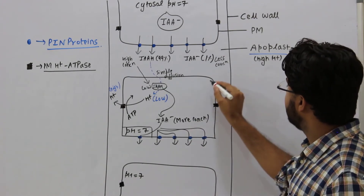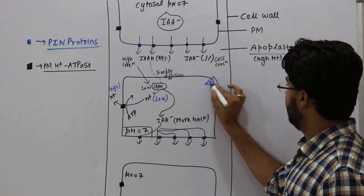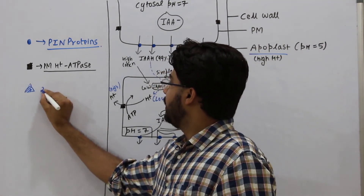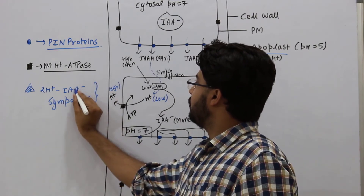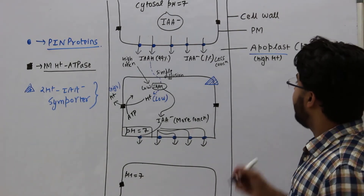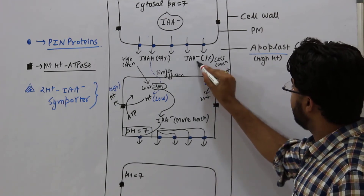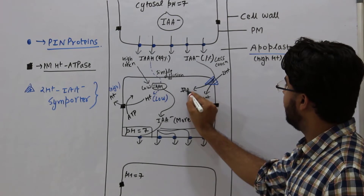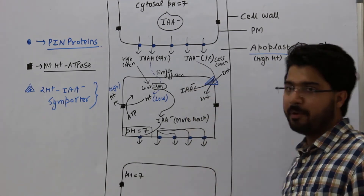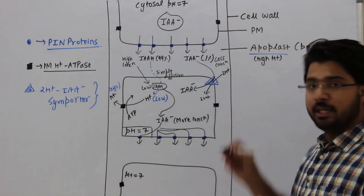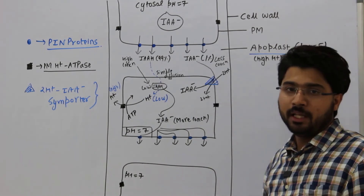IAA⁻ also enters the cell via the 2H⁺/IAA⁻ symporter (shown as a triangle in the figure). Two protons from the apoplast (high concentration) move down their concentration gradient through the symporter, releasing energy that drives one IAA⁻ molecule from low concentration (apoplast) to high concentration (cytosol). This is secondary active transport, and together this constitutes polar auxin transport.